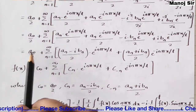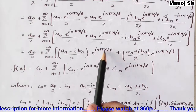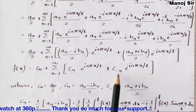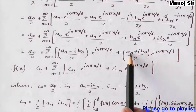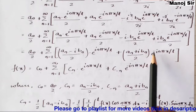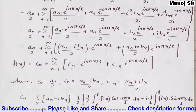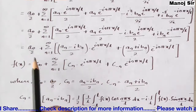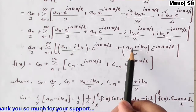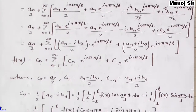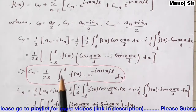We now identify: c₀ = a₀/2, cₙ = (aₙ − ibₙ)/2, and c₋ₙ = (aₙ + ibₙ)/2. So f(x) = c₀ + Σ [cₙ e^(inπx/l) + c₋ₙ e^(−inπx/l)]. We need to find the explicit integral formulas for cₙ and c₋ₙ.